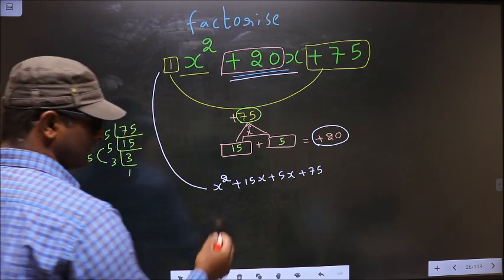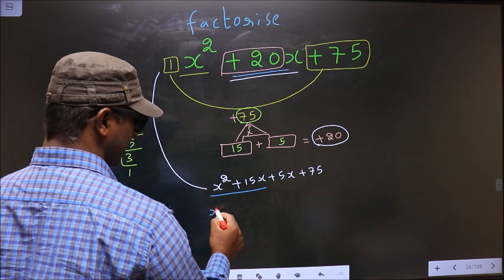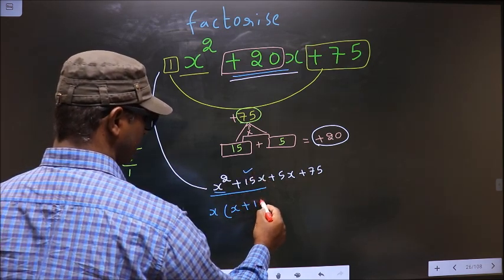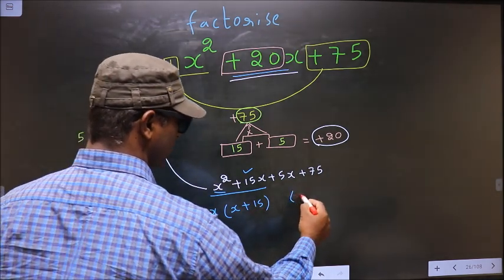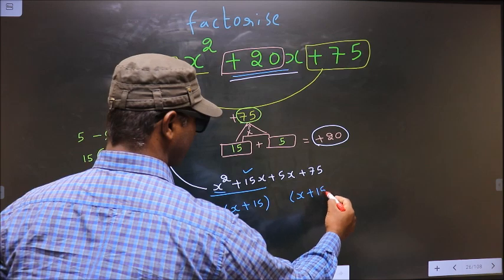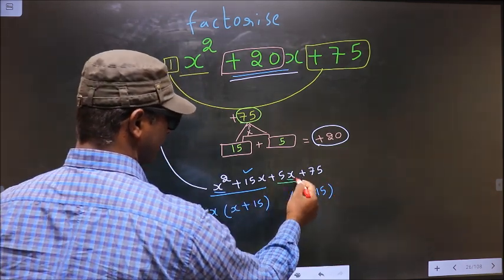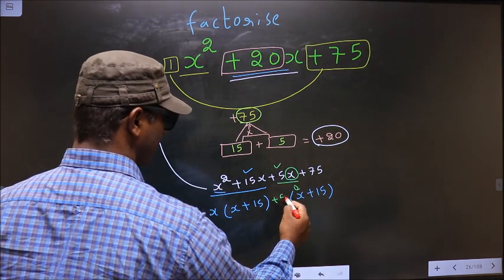Next, now from these 2 terms, what can be taken out common is x. So here you get x and here you get plus 15. Whatever you have got here, here also you should get the same thing. Now from this, x has gone inside, so outside you are left with plus 5.